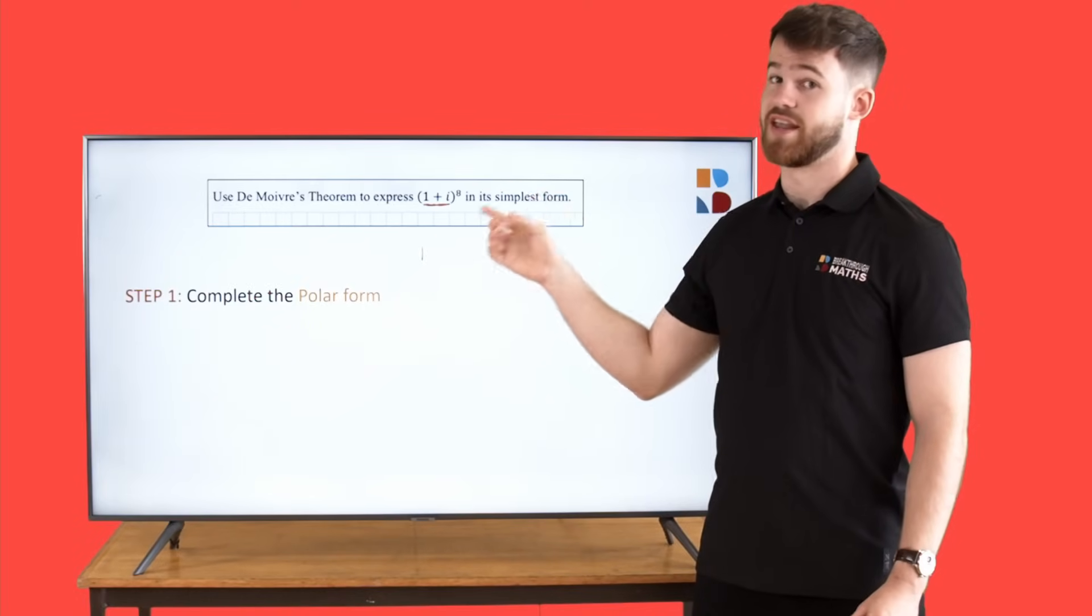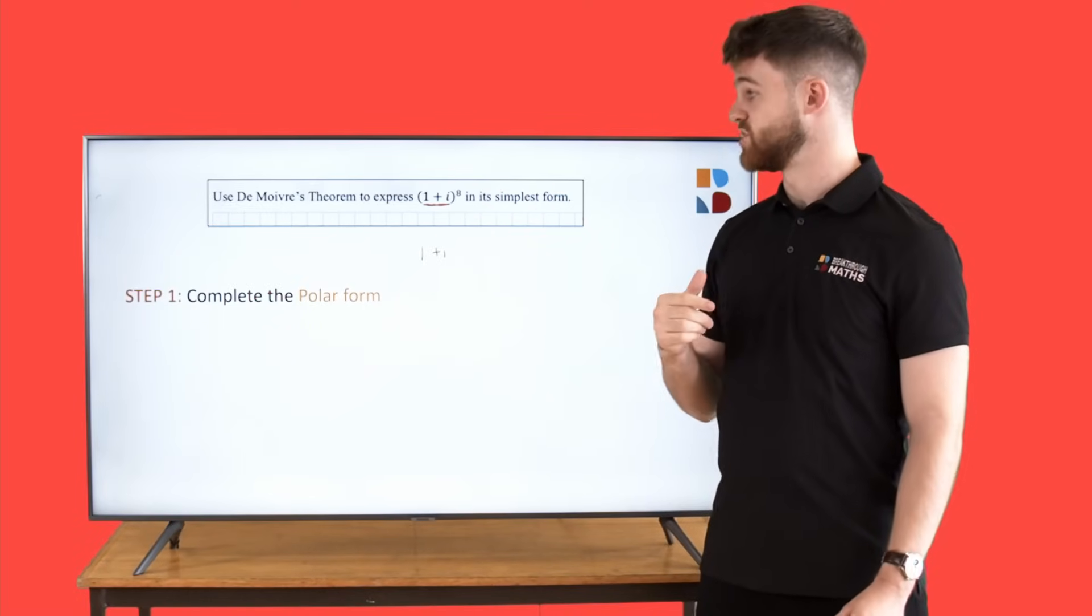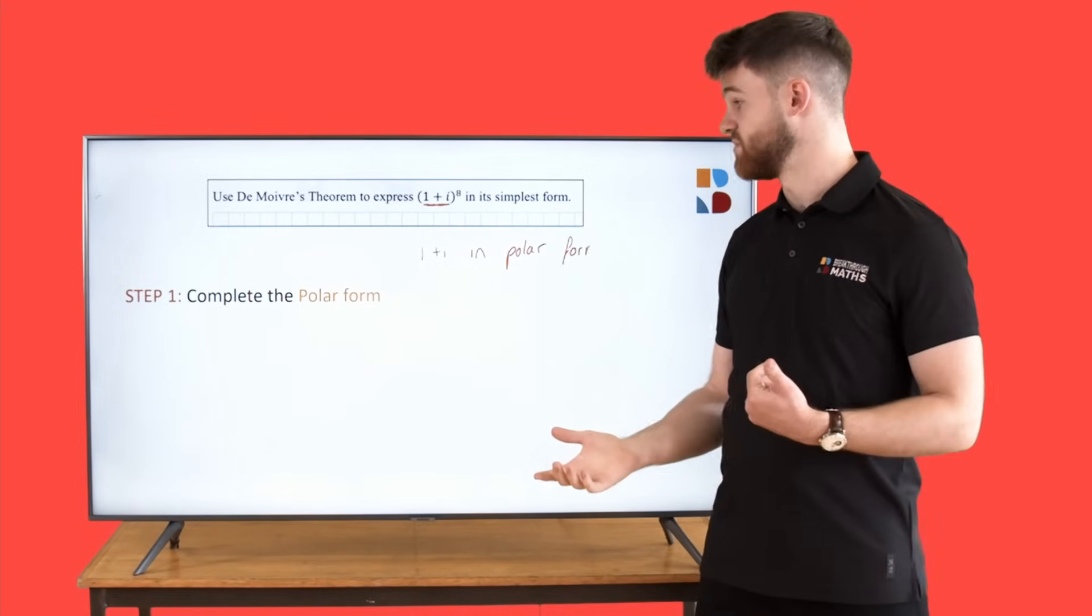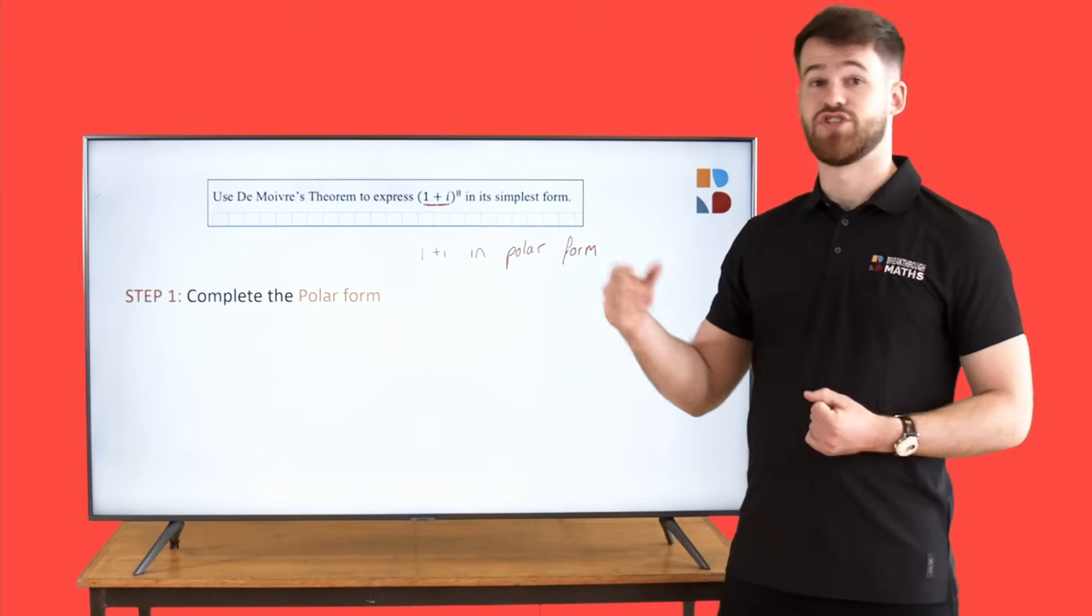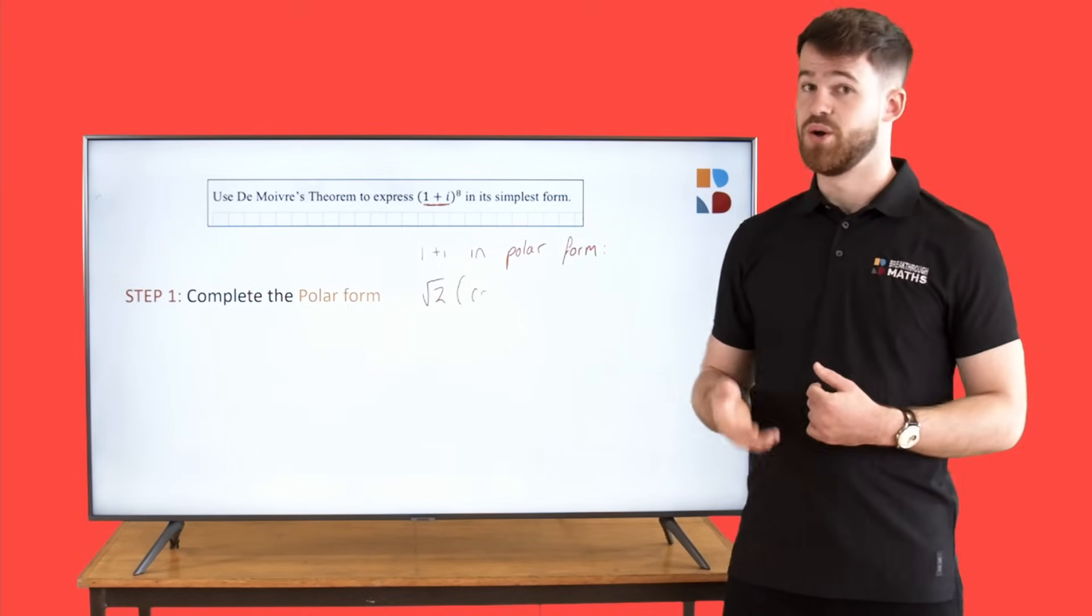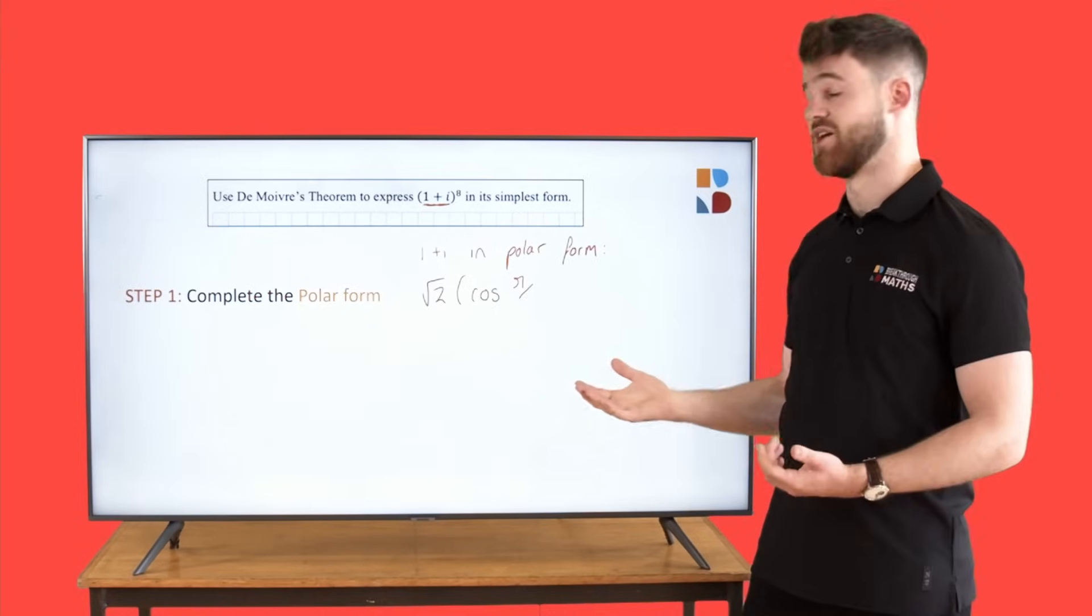Ignore the power here. For getting it in polar form first, we're just going to put 1 plus i into polar form, which if you do that out comes out to be root 2 times cos pi over 4 plus i times sin pi over 4.